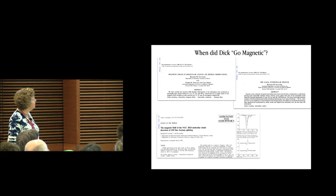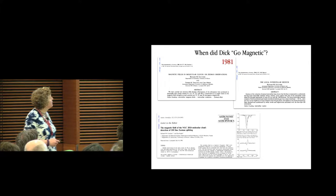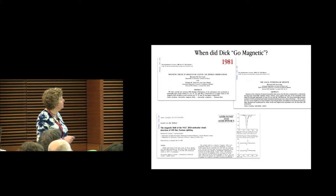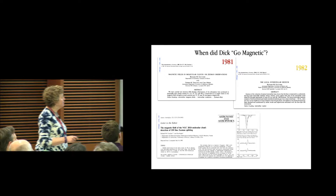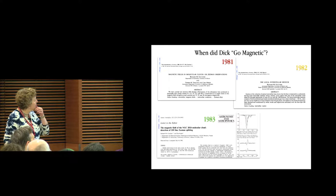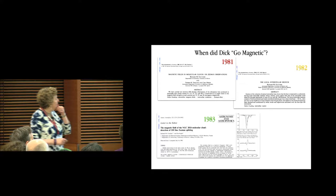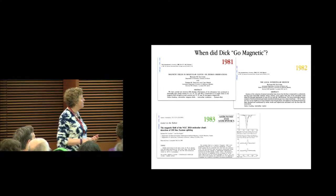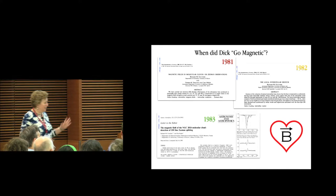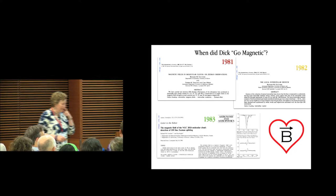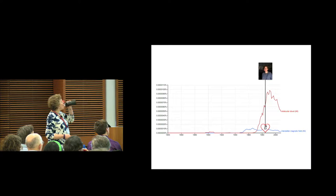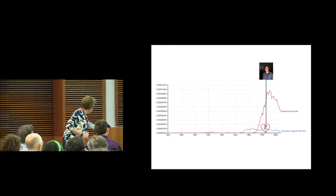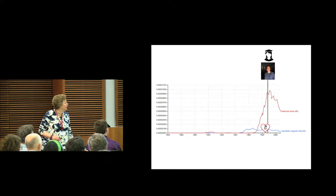Dick tried to measure magnetic fields in 1981 — this is shown in red because it didn't work. He went back and did more ISM work in 1982, but didn't give up. In 1983 it actually worked: he detected the Zeeman effect in OH absorption, and it was over after that. I too had an interest in magnetic fields. I get a PhD, and look what happens.